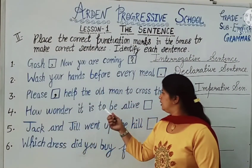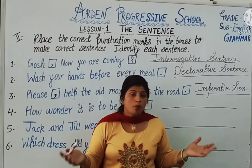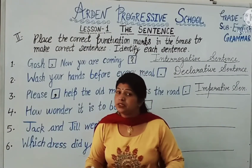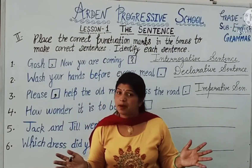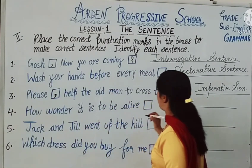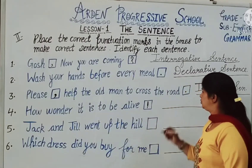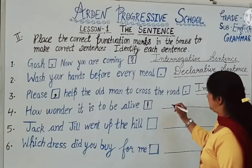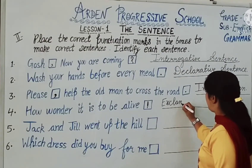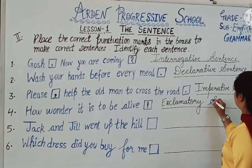Fourth one: How wonderful it is to be alive! When a strong or sudden feeling comes, we use an exclamation mark. So we will put an exclamation mark at the end. This is an exclamatory sentence.